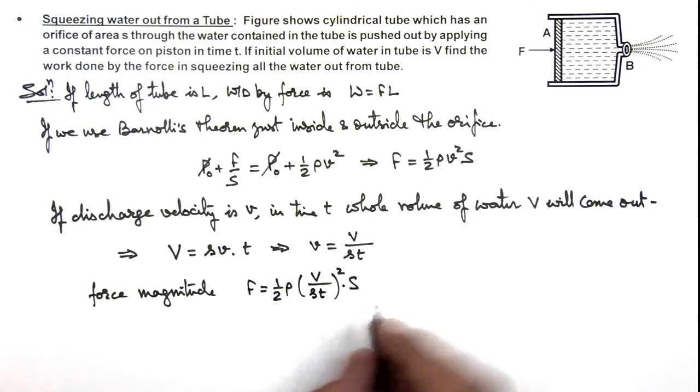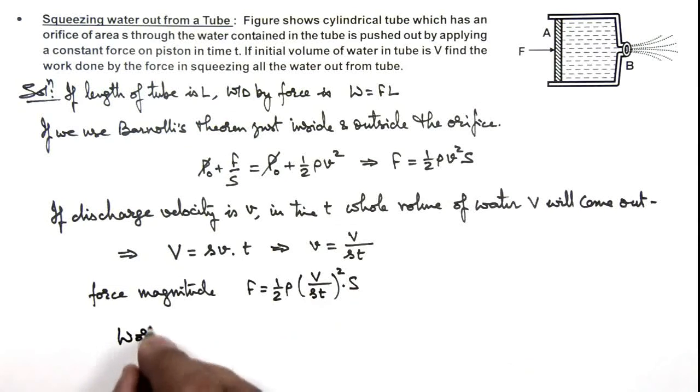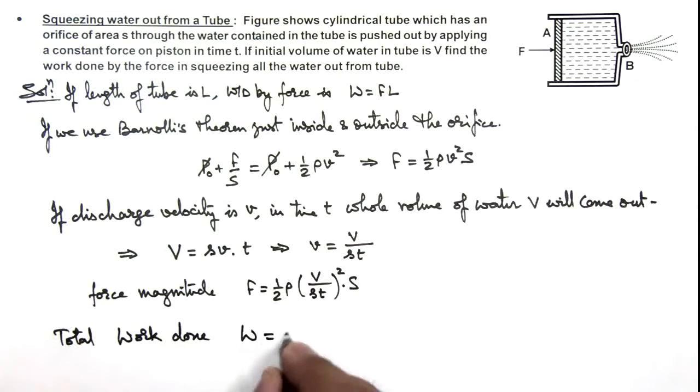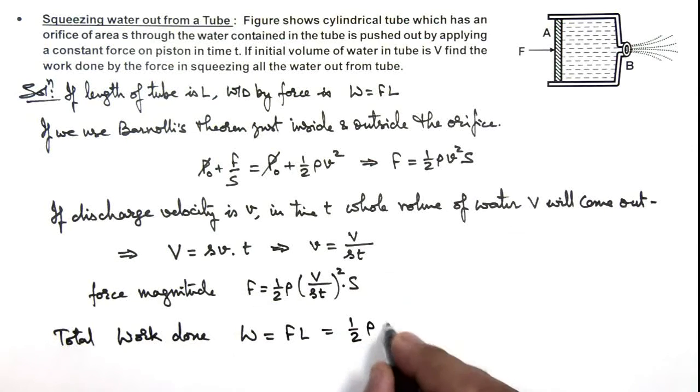If we calculate the total work done, this total work done is given as FL. So we multiply this force with L. We get half ρ V² by s²t² multiplied by sL.